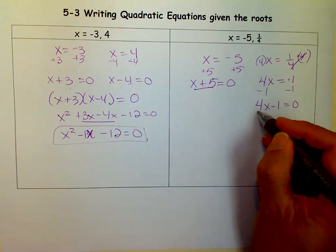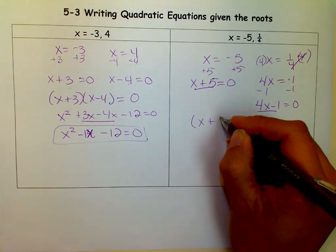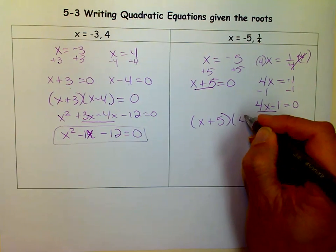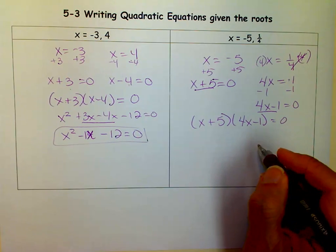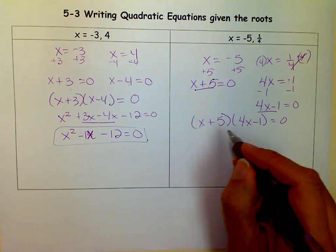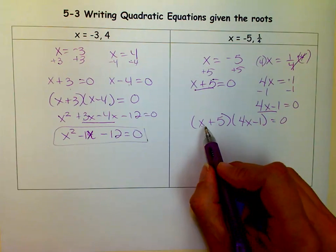So now these are the two factors that I had set equal to 0 if I was solving it. So I put them back in the parentheses, and then I use FOIL to find the equation, to find the quadratic form of the equation, not the factored form.